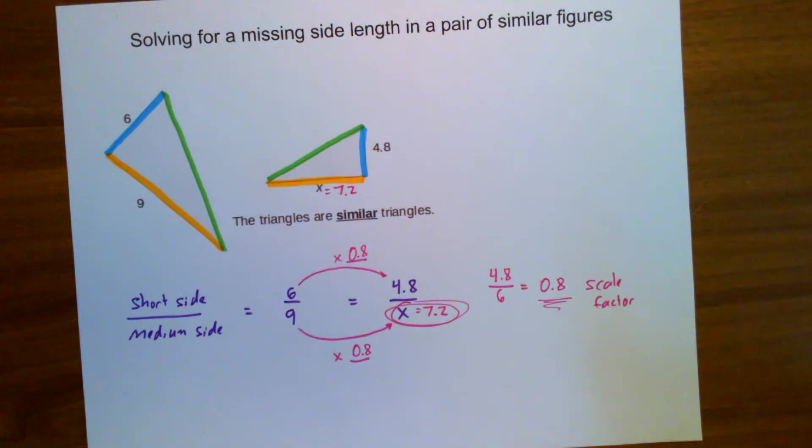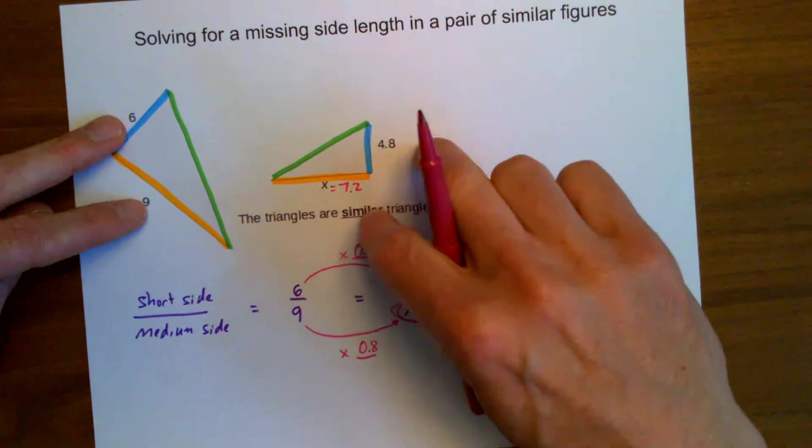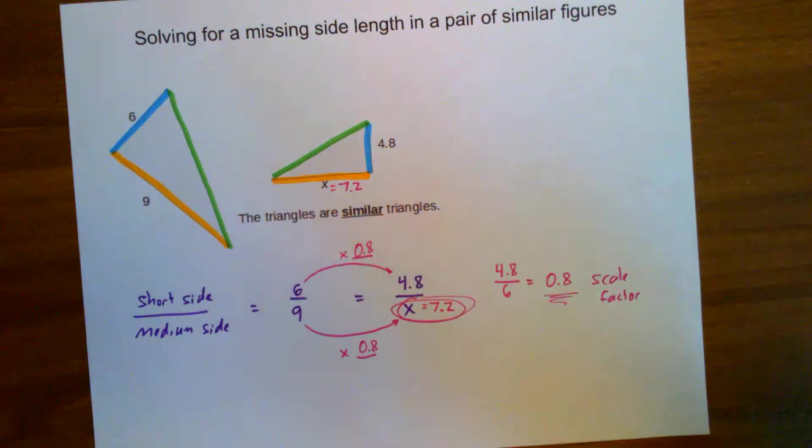So I have solved for this missing side length knowing that the ratios of these sides needs to remain the same if these are a pair of similar triangles. The problem says they are so I can use that ratio to solve. So hopefully that helps when you are dealing with similar figures.